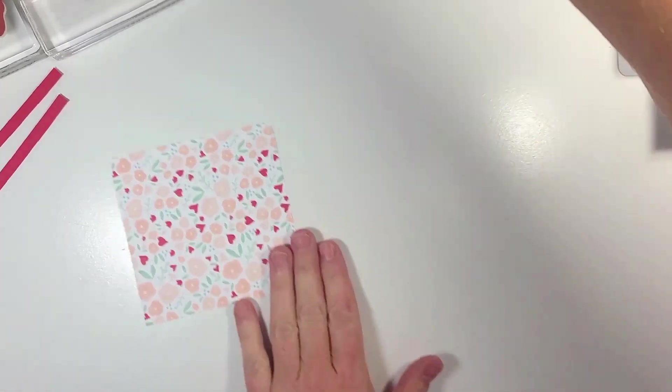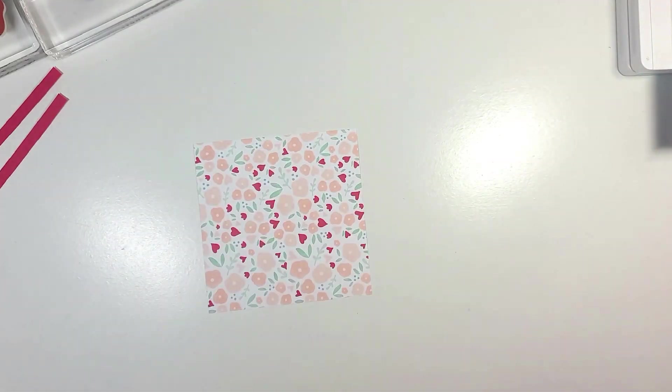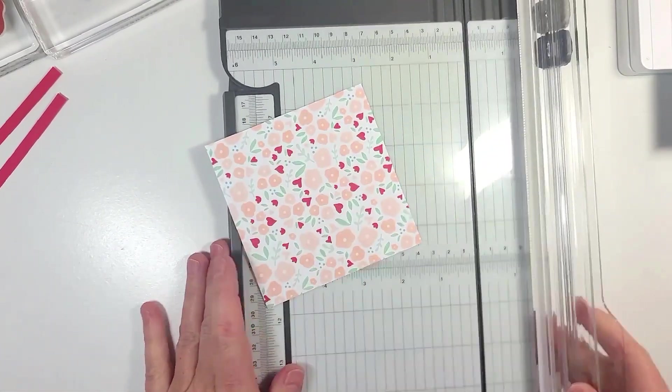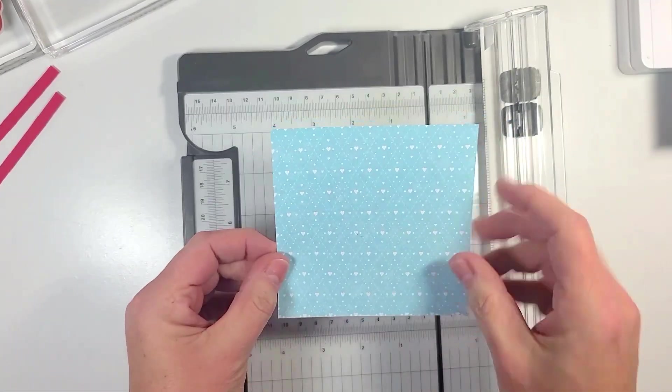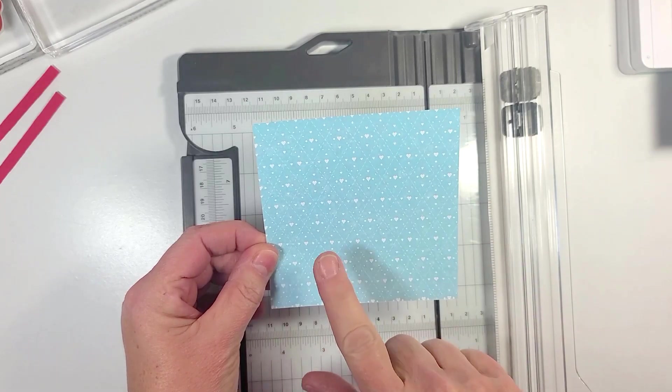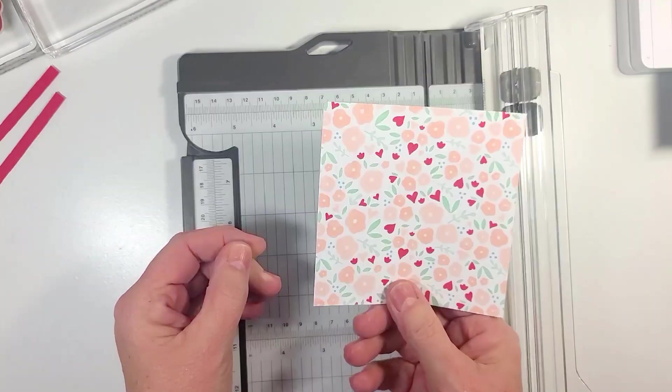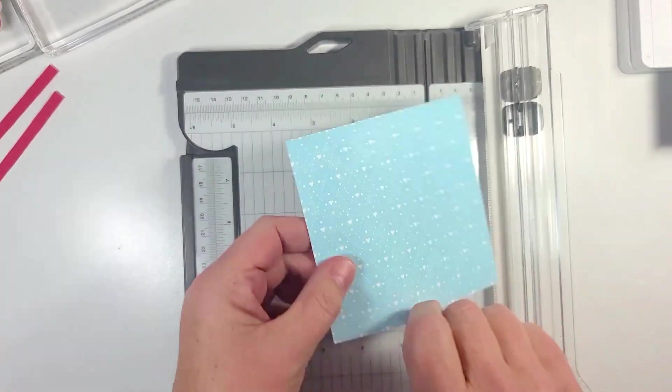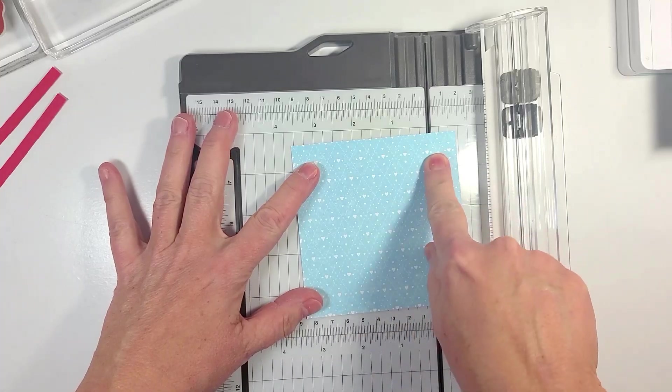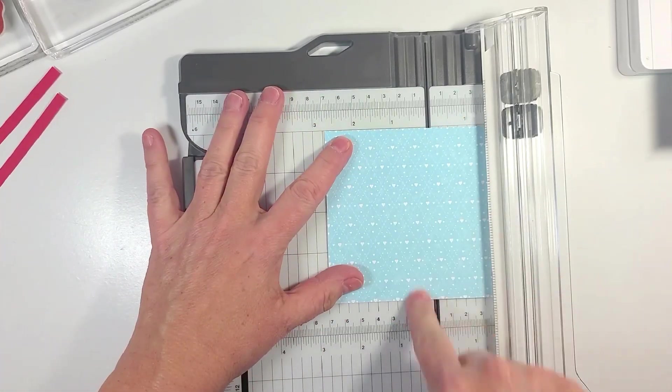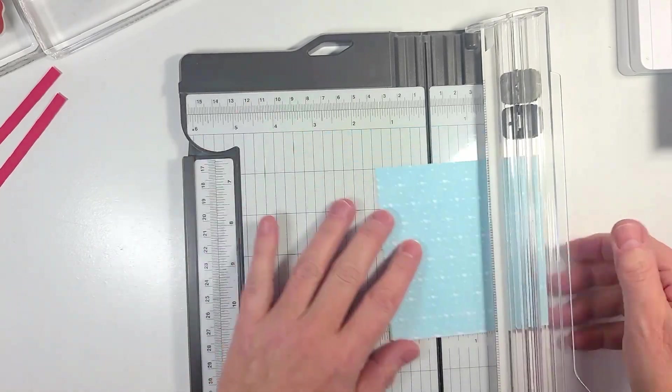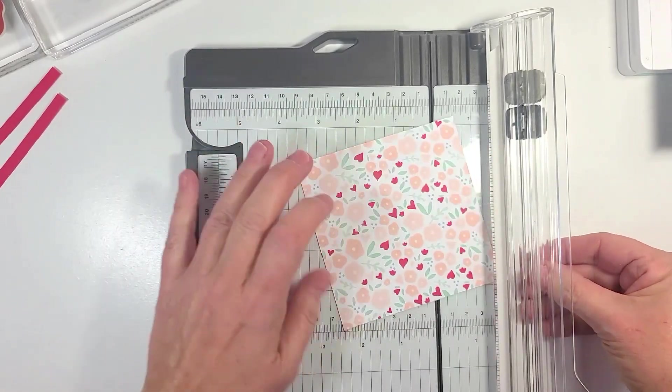We're going to get this out of the way for now. I'm going to show you how we're going to cut this with our trimmer. Now you want to make sure if you have directional paper like this one, make sure you have it facing the right side up when you cut it. For instance like this, the hearts are going to be facing the correct direction. I'm going to be using this side of the paper.